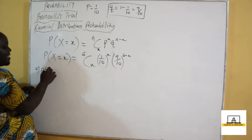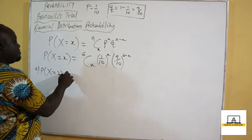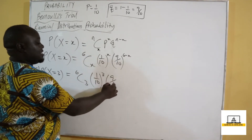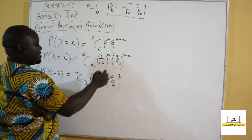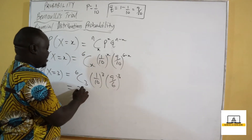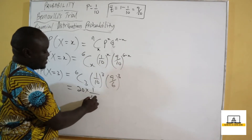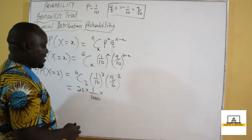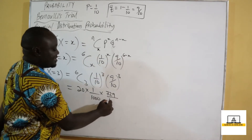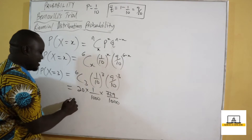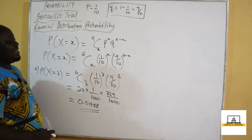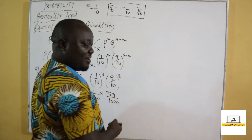For part A, exactly three will be defective, so x equals three. We shall have six combination three, times one tenth raised to the power three, times nine over ten raised to the power three. Six combination three is twenty, times one over a thousand, times nine over ten cubed gives 729 over a thousand. Our final answer becomes 0.01458.